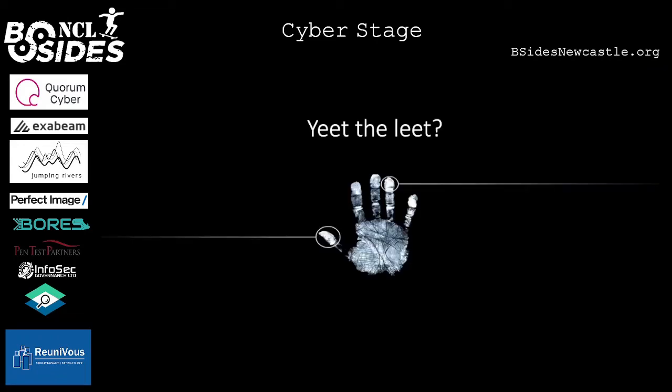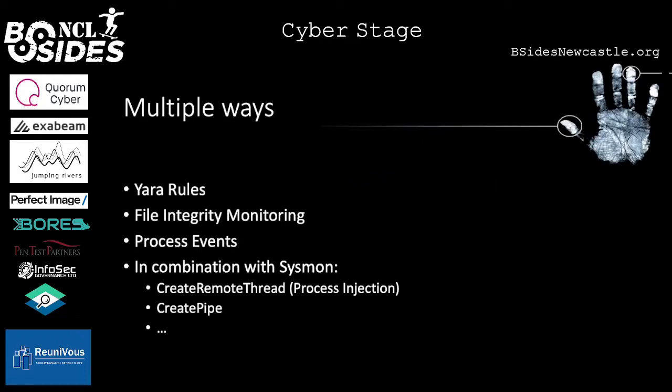Now that we've seen two different C2 frameworks, let's look at detection. There are different ways to catch malicious actors or malicious processes on a system with OSQuery. Some I will go over are YARA rules, file integrity monitoring, process events, and of course combining OSQuery with Sysmon, which is actually quite powerful. Let's start with YARA rules.